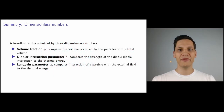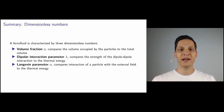Let's quickly summarize the three dimensionless numbers which characterize a ferrofluid. First, we have the volume fraction phi, which compares the volume occupied by the dipolar particles to the total volume of the system. Second, we have the dipolar interaction parameter lambda, which compares the strength of the dipole-dipole interactions to the thermal energy. And lastly, we have the Langevin parameter alpha, which compares the interaction of a particle with the external field to the thermal energy.